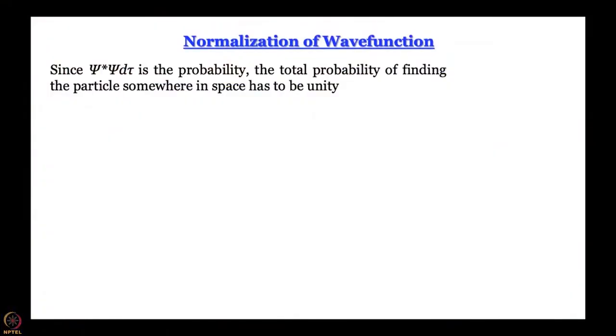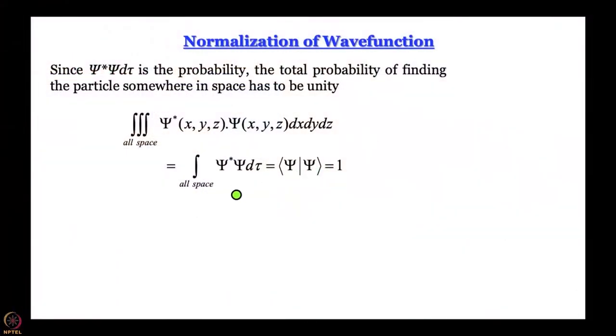What is the meaning of normalization? ψ*ψ dτ is the probability of finding the particle within a volume element at some particular point. If we integrate this over all space — ∫ψ*ψ dτ over all space — what does it give? The probability of finding the particle somewhere in the universe. Now the particle had better be somewhere in the universe. So the probability is equal to 1 — you will definitely find it. Thus ∫ψ*ψ dτ = 1, also written as ⟨ψ|ψ⟩ = 1. This is the normalization condition.